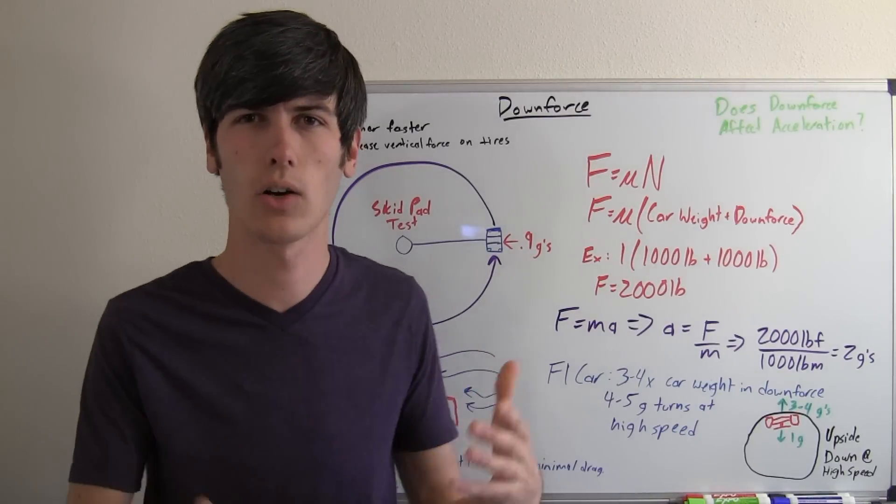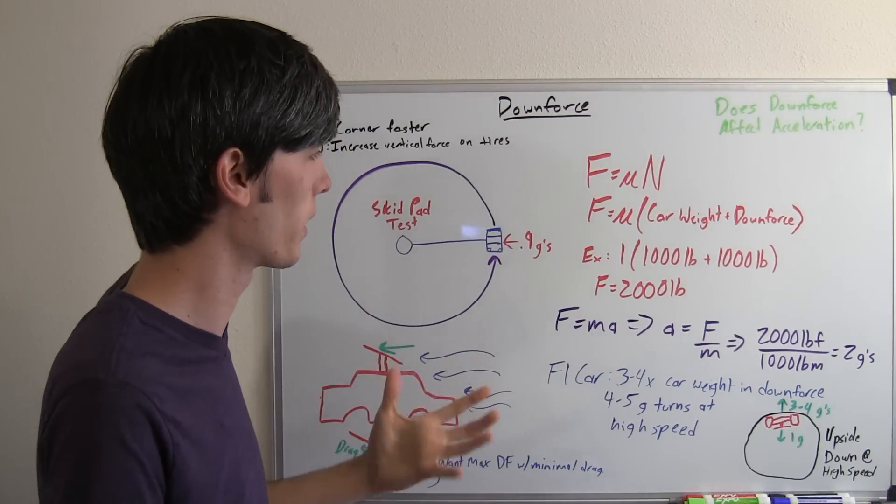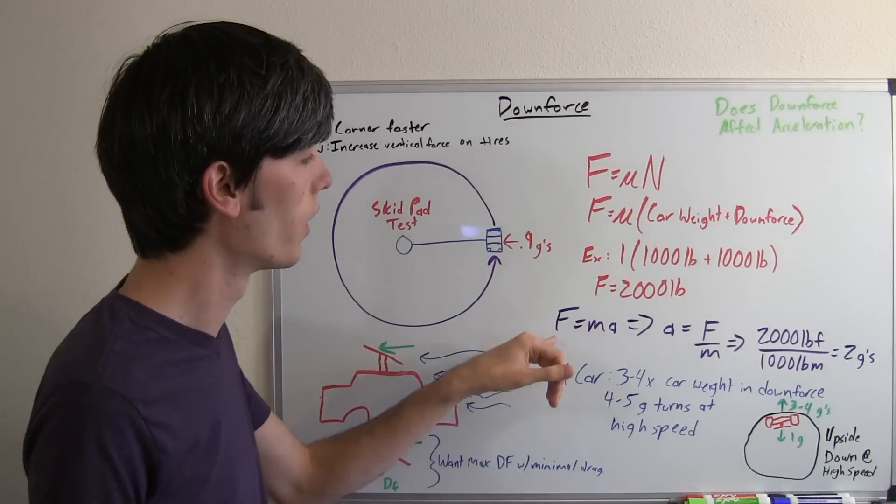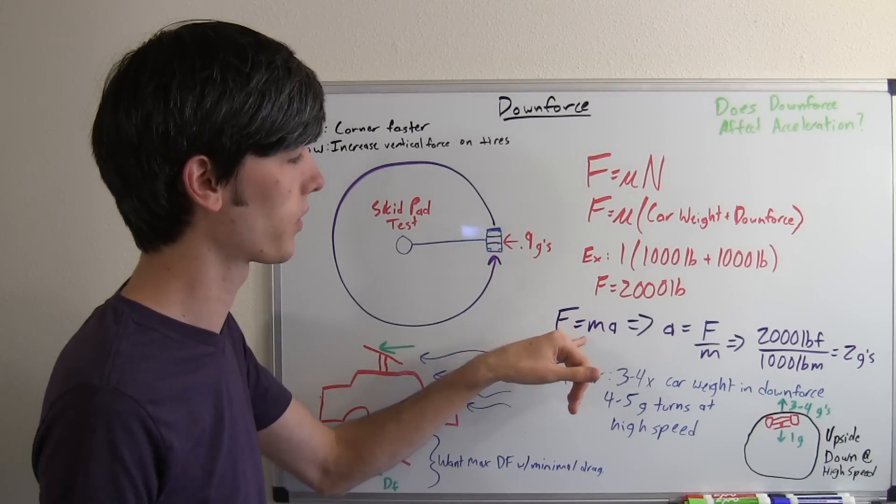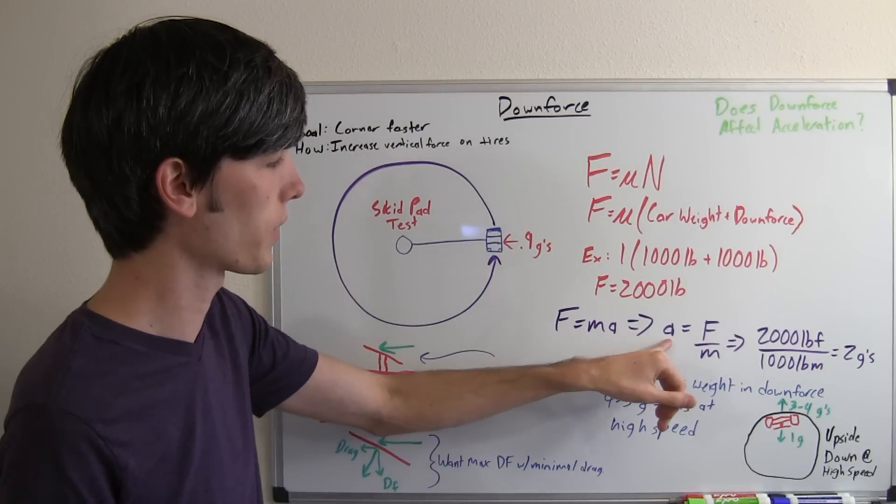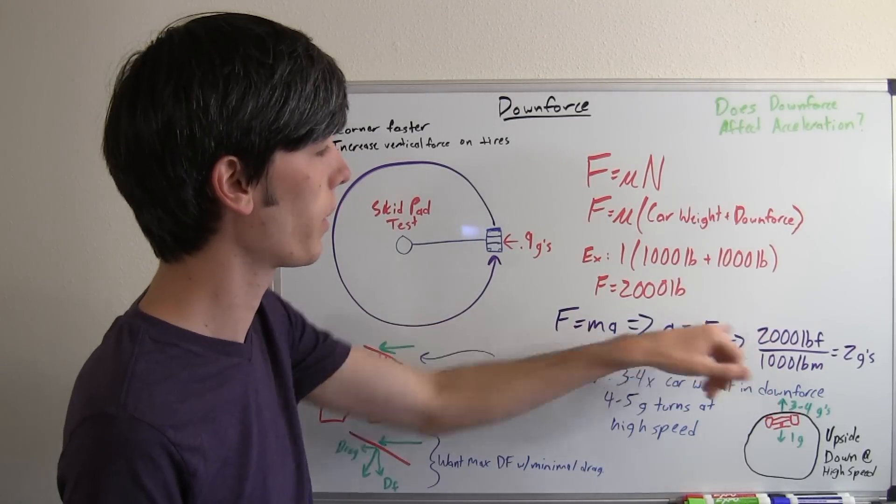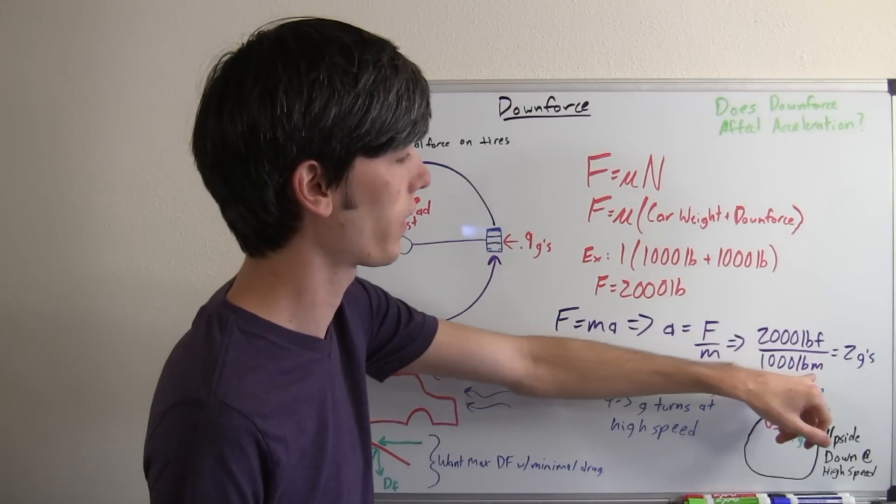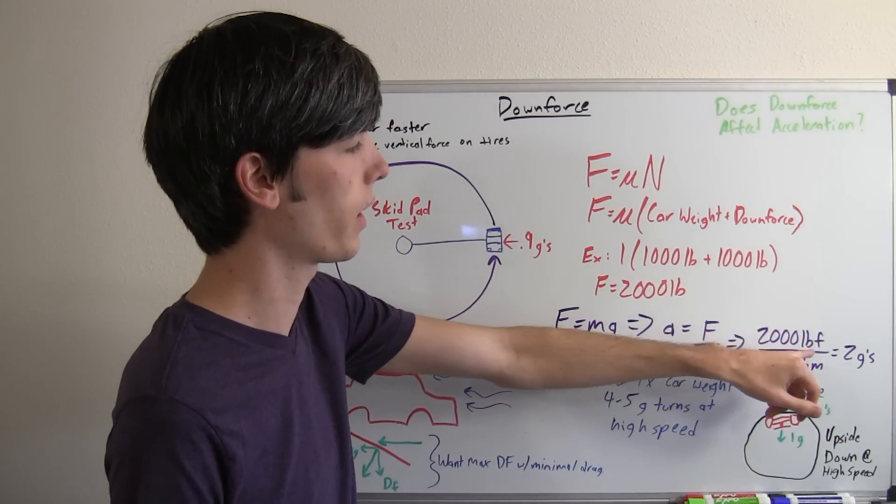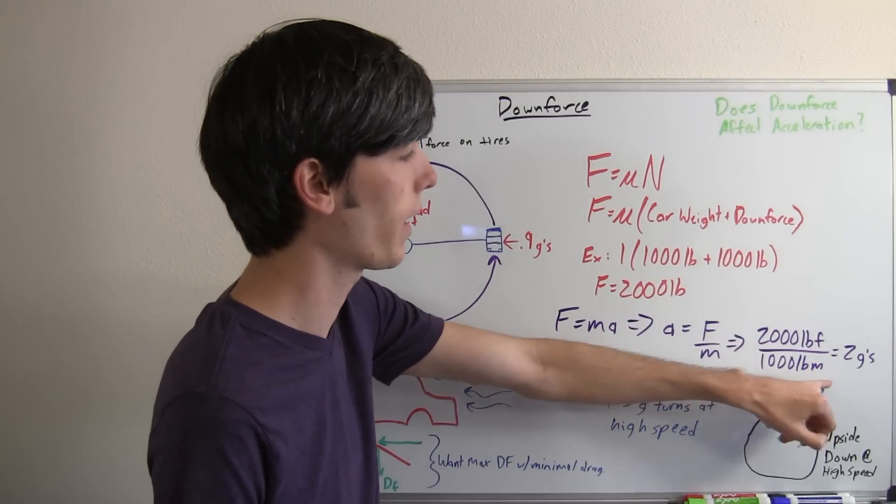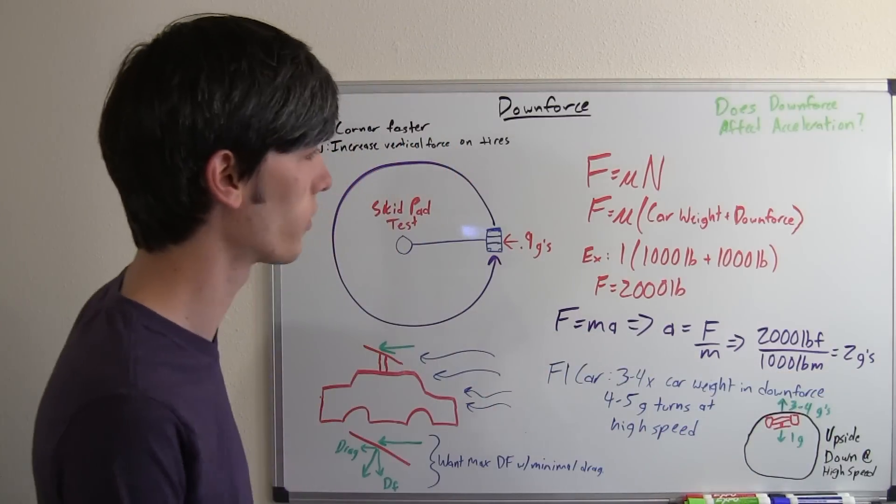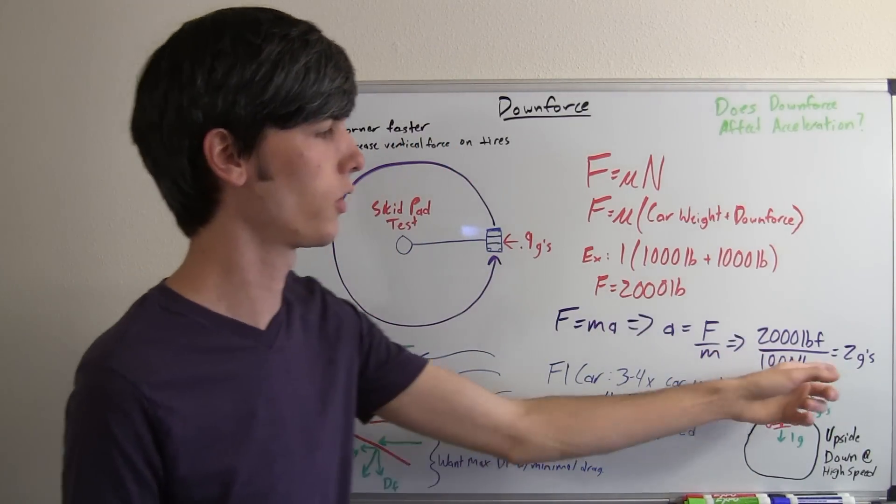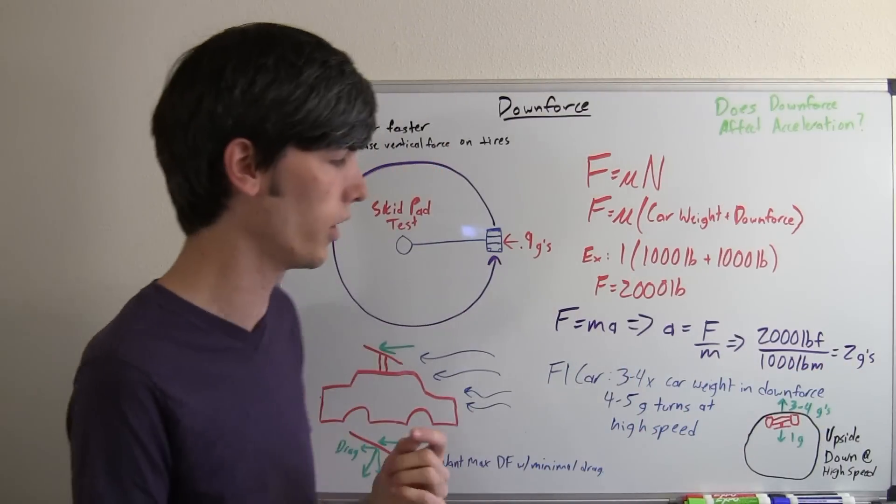How many G's can this car hold when going around a corner? That's something that's used within the industry to compare different vehicles to one another. We know that force equals mass times acceleration, so we can say that acceleration equals force divided by mass. We've got a 2,000 pound frictional force that the car is capable of withholding and it weighs 1,000 pounds. So we take 2,000 pound force divided by 1,000 pound mass and that gives us 2 G's. If this were the case, on the skid pad test you would see that it would be able to hold 2 G's.